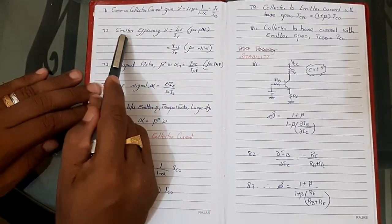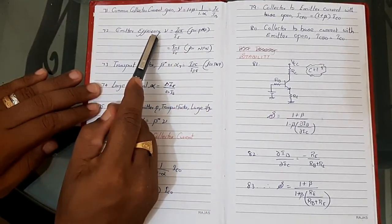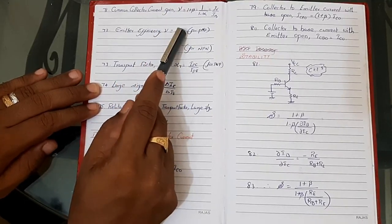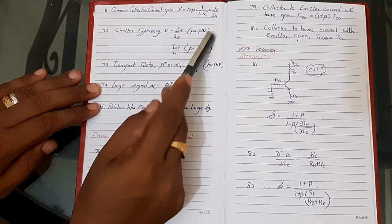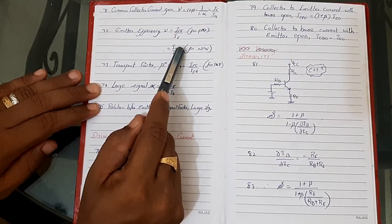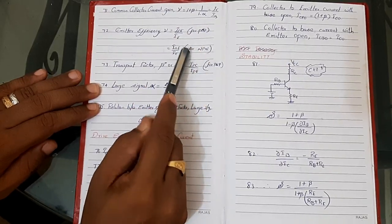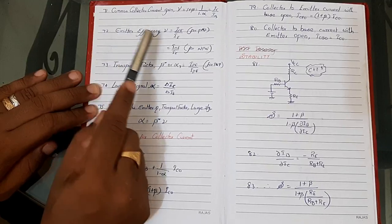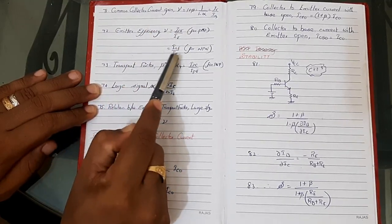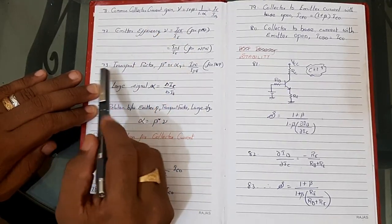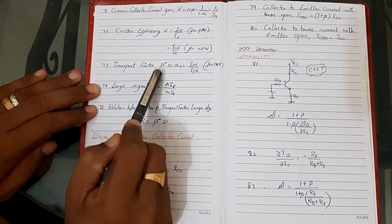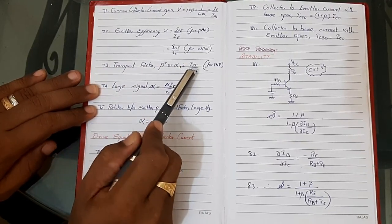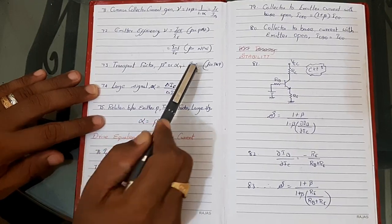Number 72: Emitter efficiency γ (different from common collector γ) = IPE / IE for PNP transistor, or INE / IE for NPN transistor. Since we are finding emitter efficiency, the emitter current comes in the denominator. Number 73: Transport factor β* (or αT) = IPC / IPE — collector current due to holes divided by emitter current due to holes (for PNP transistor).